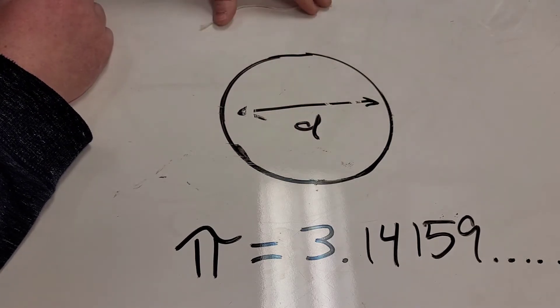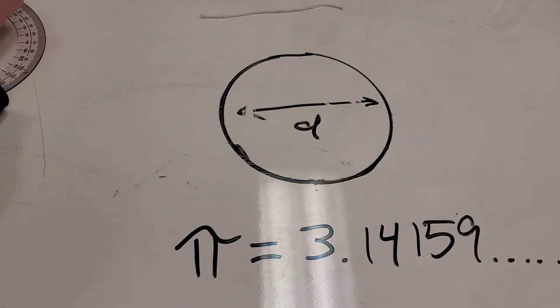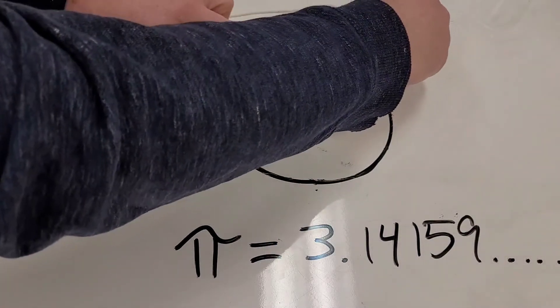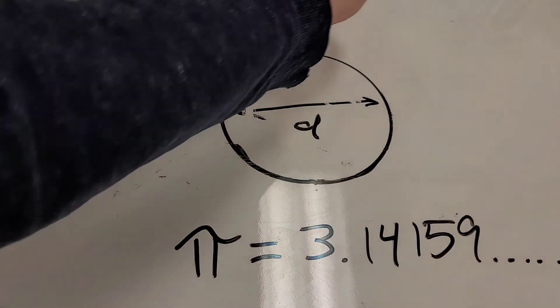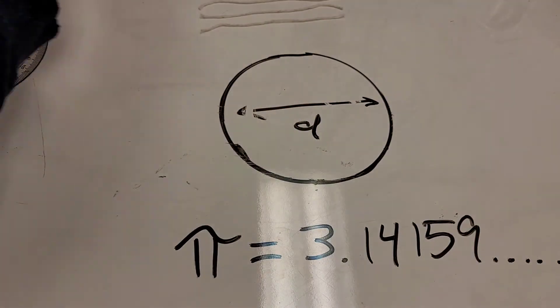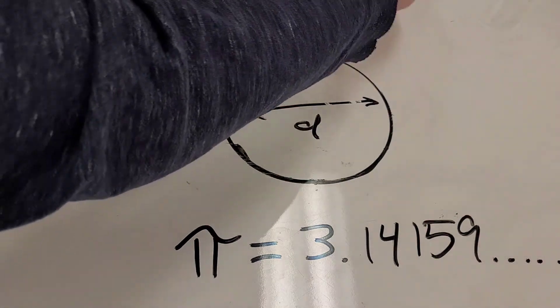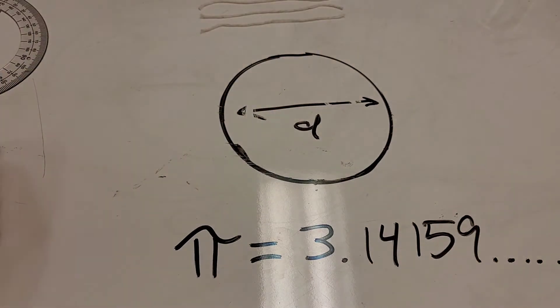So I'm going to take this diameter, which is the exact length of the string, and then cut some more strings the same length. You can do this with any circle. I did this ahead of time to save time in this video, but you can do this with any circle whatsoever, and if you have four of them you'll be able to prove that pi works.